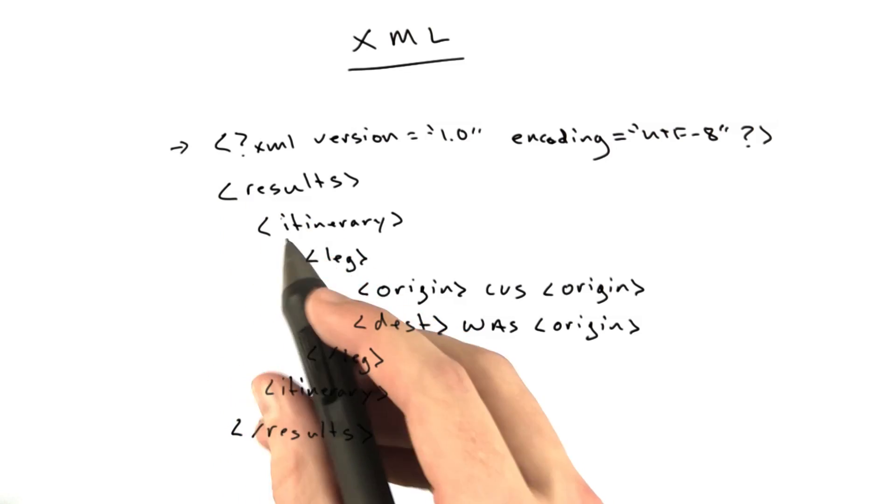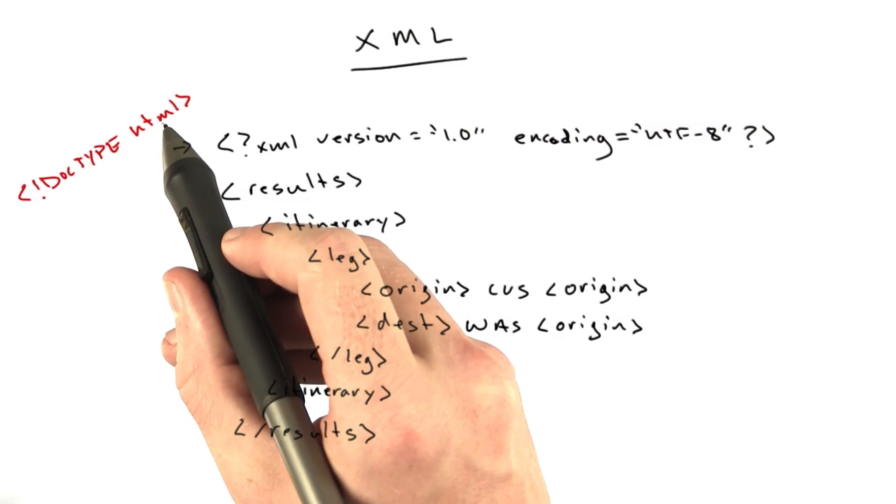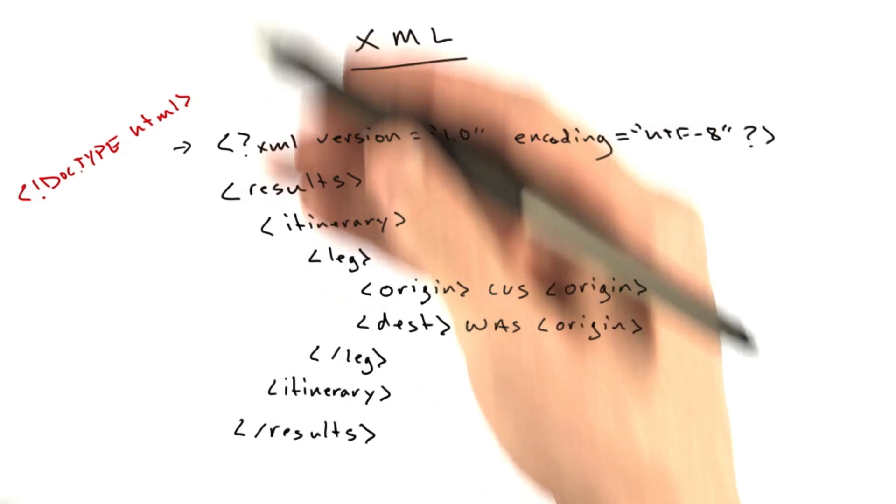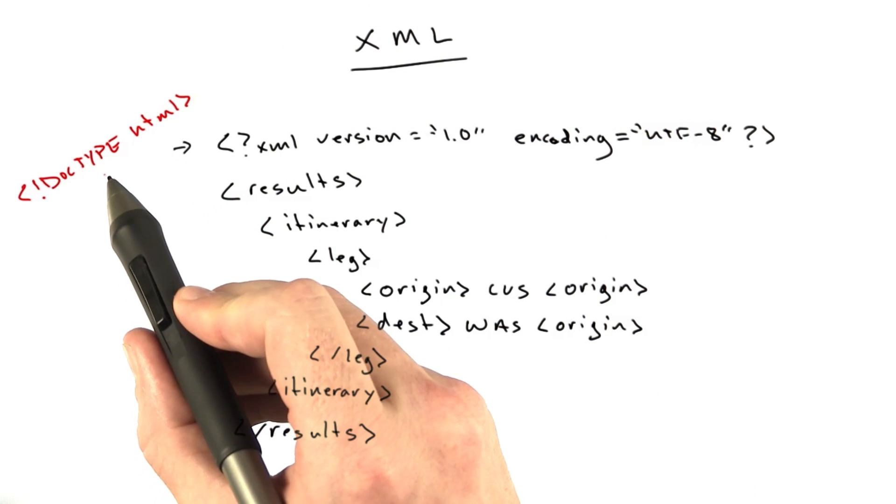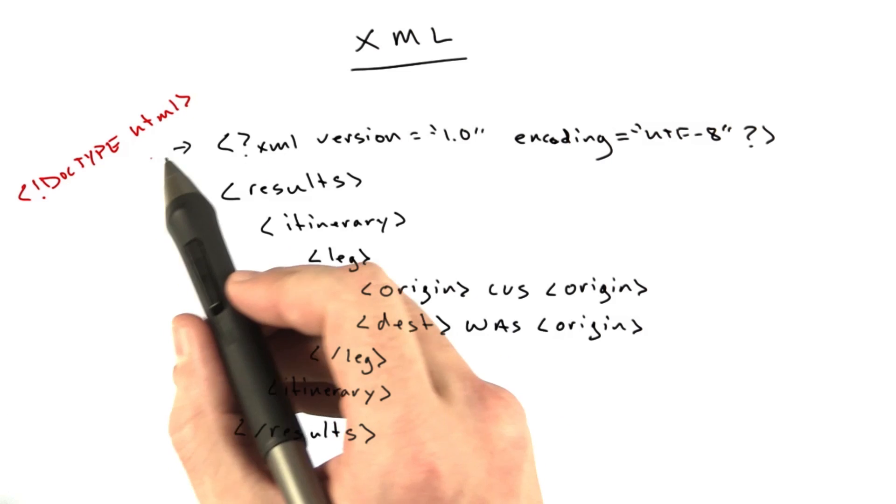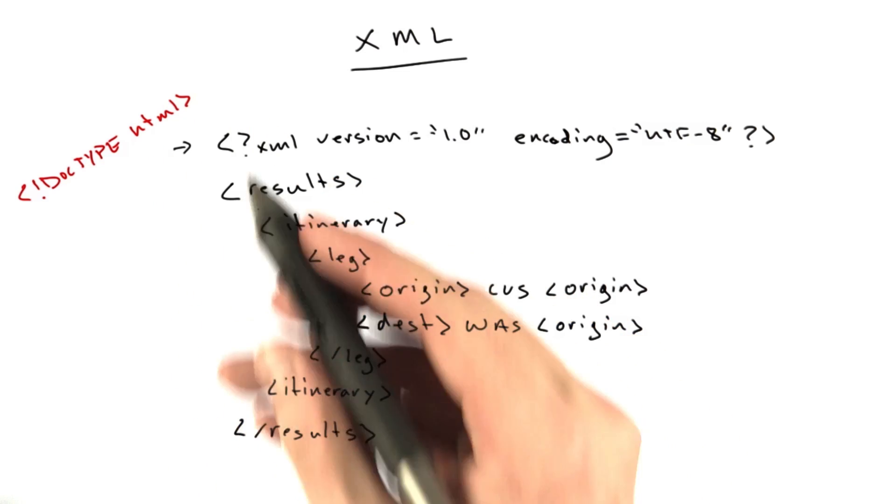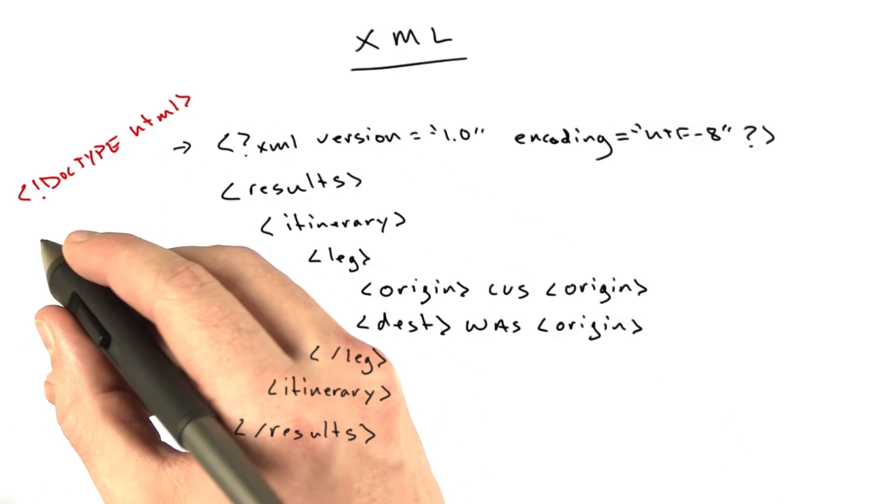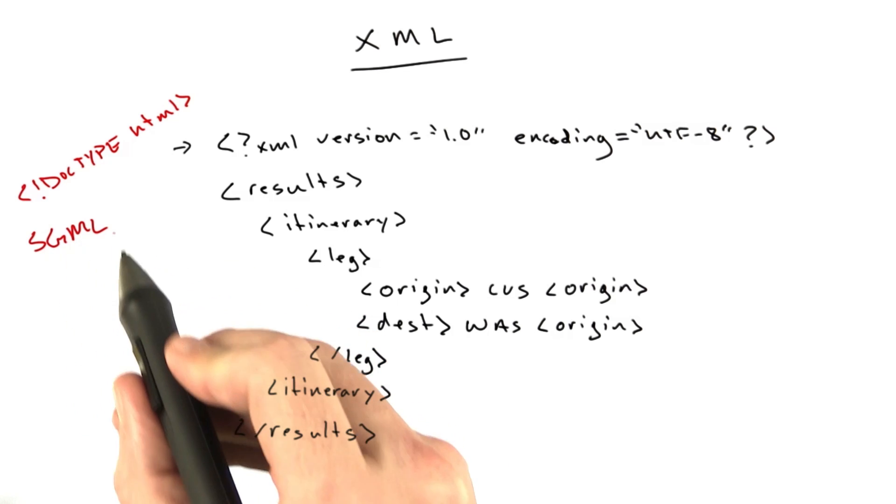Remember, we've been using HTML5, so our doc type looks something like this. And this is the first line that says what format the rest of the document is. Now, the reason both HTML and XML have doc types and this tag structure is because they actually share a common ancestor in SGML, which was invented in the 80s.